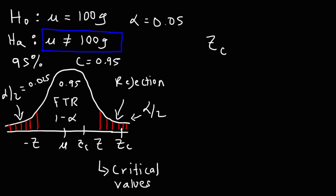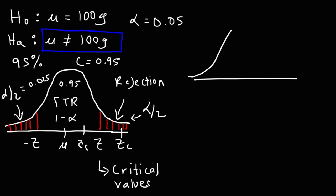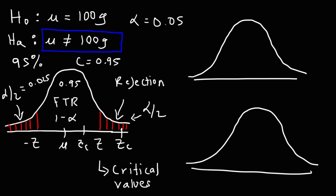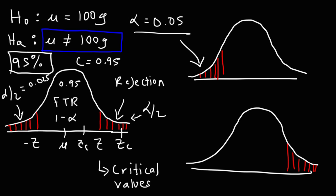I'll talk about how to get those z-values in another video. For now, let's talk about the other one-tailed tests — there are two of them. The first is a left-tailed test and the second is a right-tailed test. At a 95% confidence level, alpha is still 0.05. For the left-tailed test, alpha is completely on the left side.